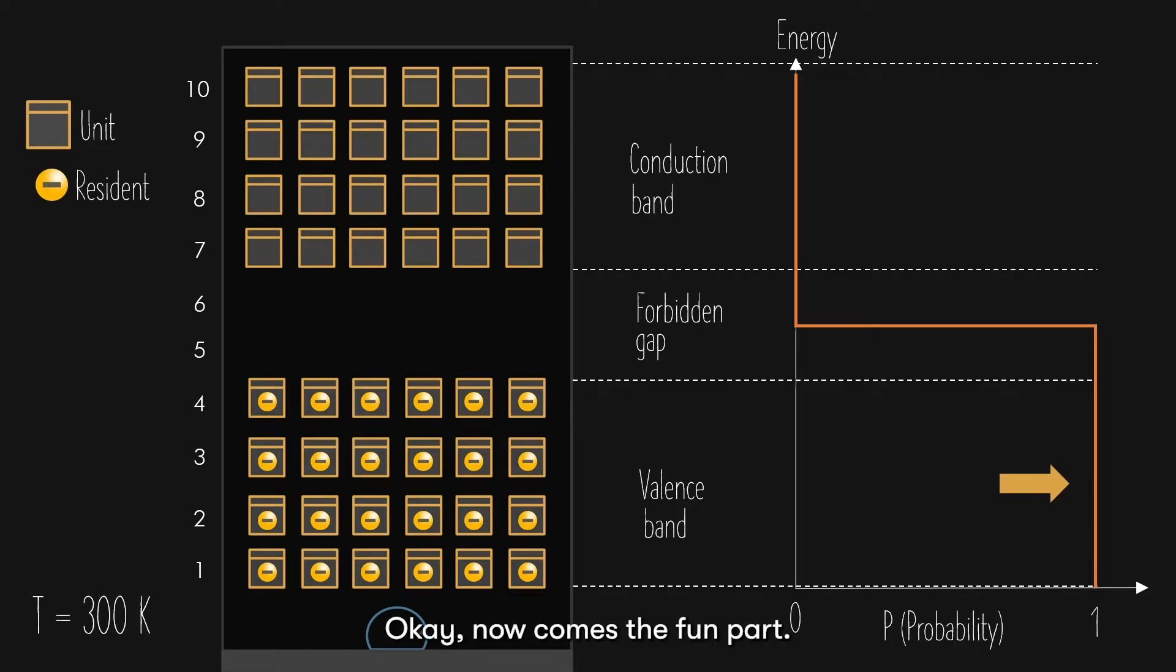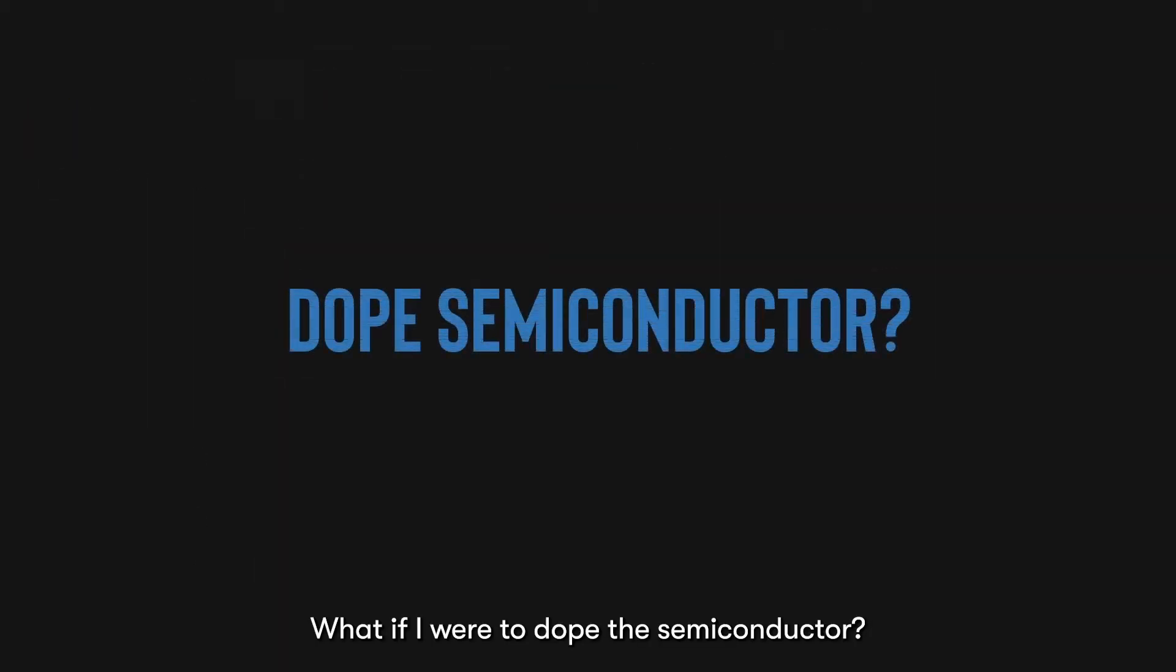Okay, now comes the fun part. What if I were to dope the semiconductor? What would happen to the energy probability graph? Let us start with n-type doping.